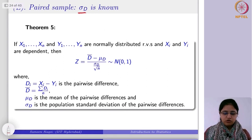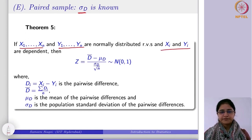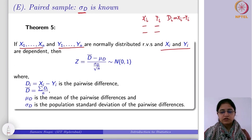What it says is: if you have x_i's and y_i's that are normally distributed and x_i's and y_i's are independent, then you can calculate d_i's. The d_i's will basically be x_i minus y_i — the difference between these two. For instance, if it is the cholesterol level and you want to see the impact of a new drug, you measure before the new drug is introduced and after that.